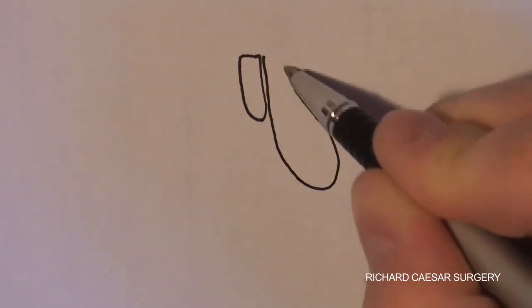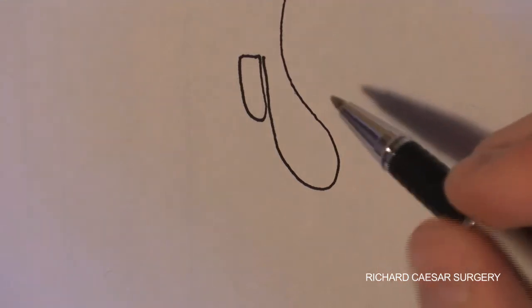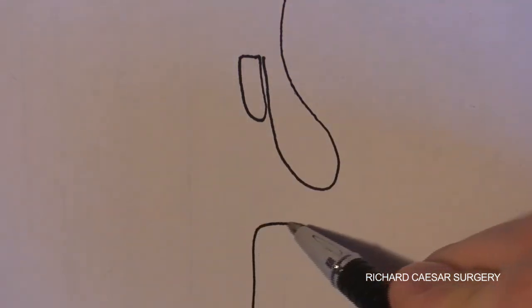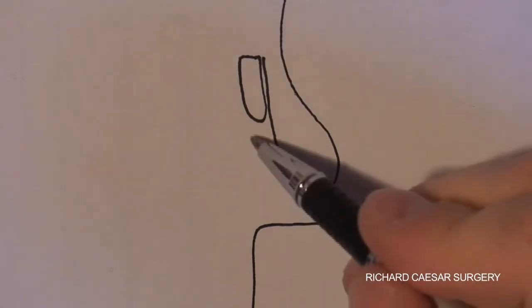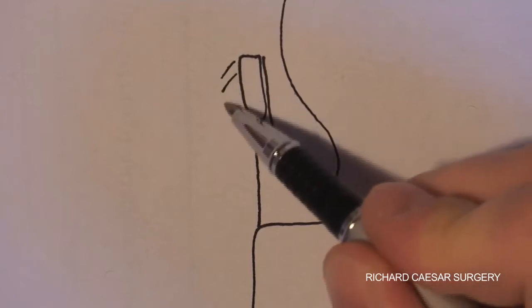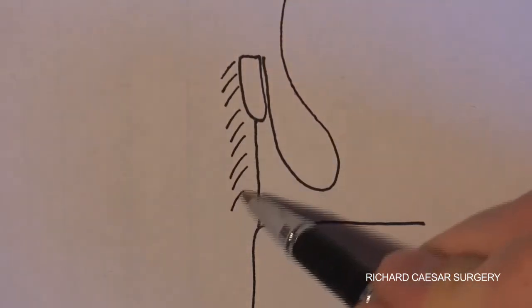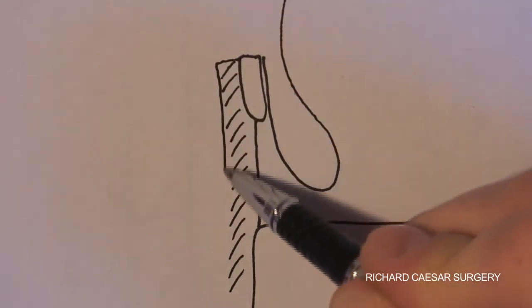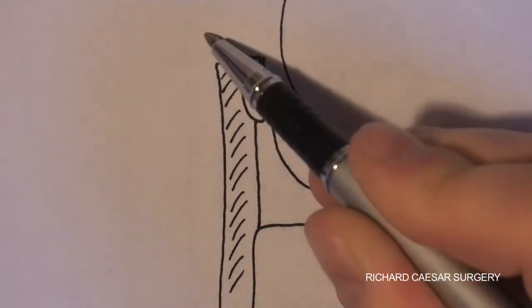If you kick off with the tarsal plate, then draw in the conjunctiva and the conjunctival fornix, then give yourself the bone, take the septum to the bone, put some orbicularis in front, some skin over the top and a lash.